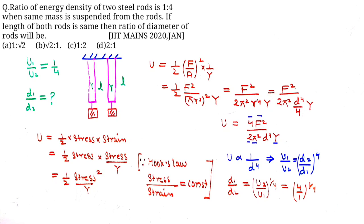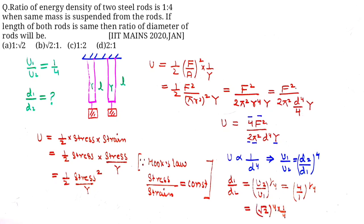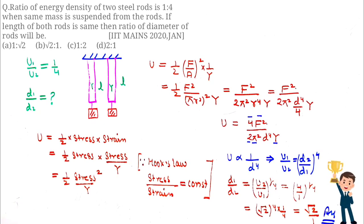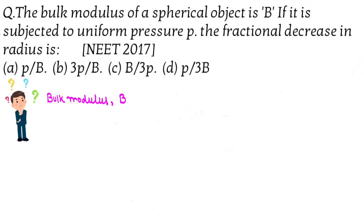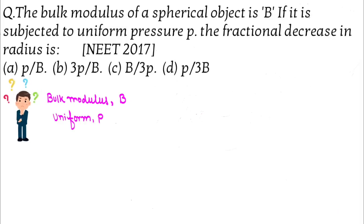After solving, you get the ratio raised to the power 1 by 4. Since 4 is basically root 2 to the power 4, after solving you get the ratio root 2 is to 1 as the answer. Now in the next question, the bulk modulus of a spherical object is B and it is subjected to uniform pressure P.